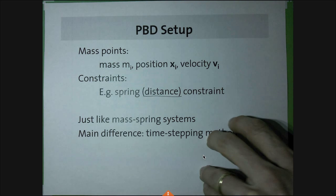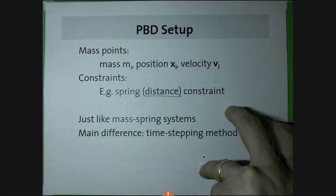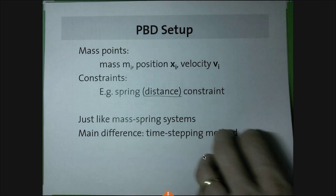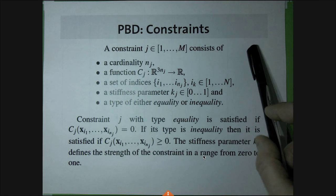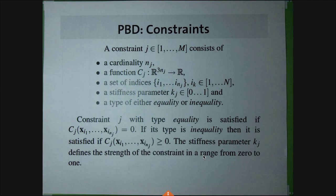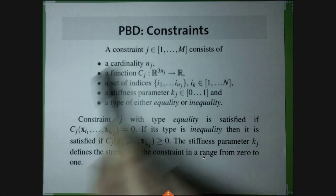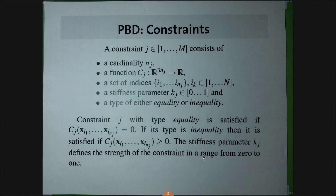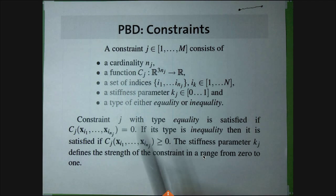Let's talk about constraints in general, because the distance constraint is just one example. There are other examples: bending constraints, pressure constraints to simulate pressure in a character — that's what gave structure to those funny guys being tortured in the video. A constraint in PBD is the main building block and essentially the PBD substitute for internal forces. We have M constraints, and the cardinality of a constraint is how many particles it applies to. A distance constraint applies to just two particles.